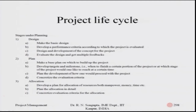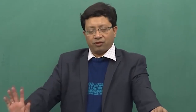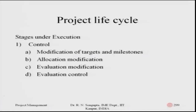Each and every task has an evaluation criteria based on which you can find out the overall criteria for the project. Stages under the execution: once the consideration and planning stage is over, you have the control phase where modification of targets, milestones, and allocation modifications are taken care of.